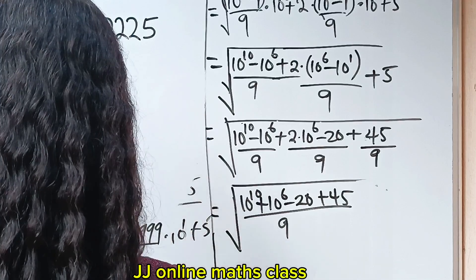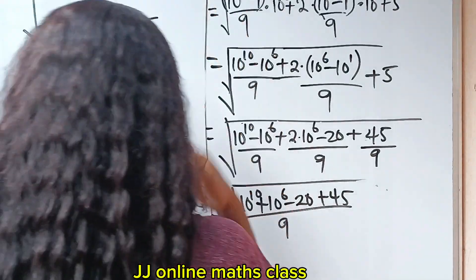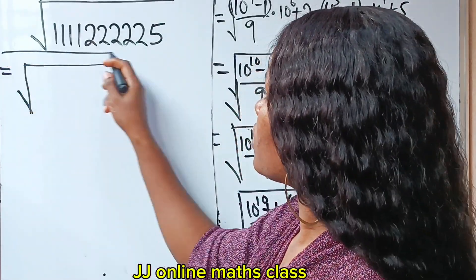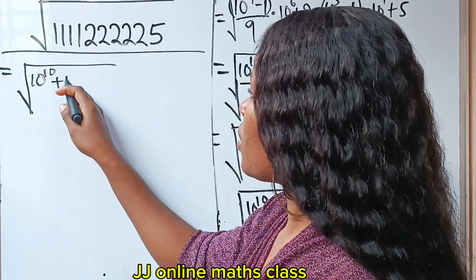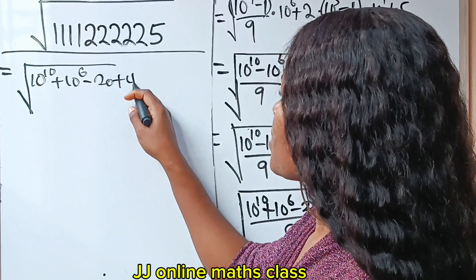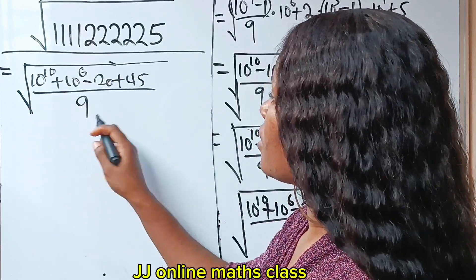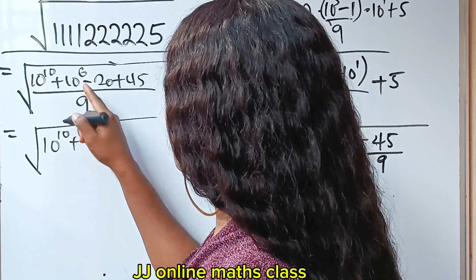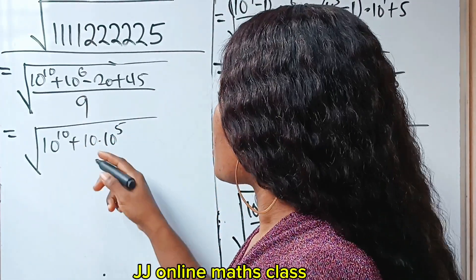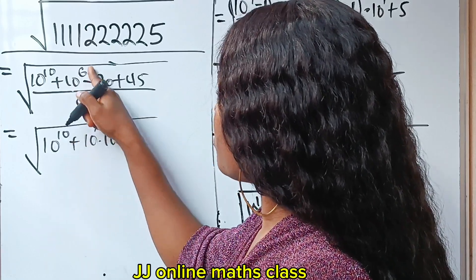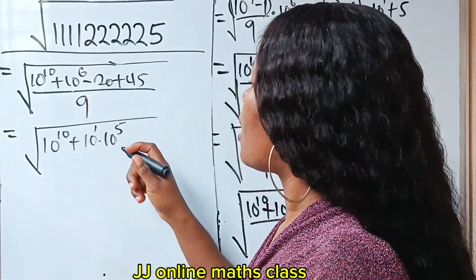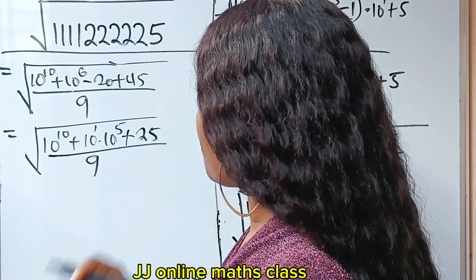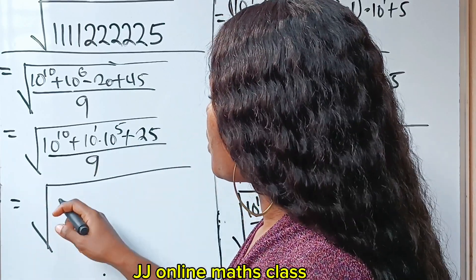We're getting to the final solution. So we have the square root of 10 to the power of 10, plus 10 to the power of 6, minus 20 plus 45, divided by 9. Since 45 minus 20 equals 25, and 10 to the power of 6 can be written as 10 multiplied by 10 to the power of 5, this becomes: 10 to the power of 10, plus 10 times 10 to the power of 5, plus 25, all divided by 9.